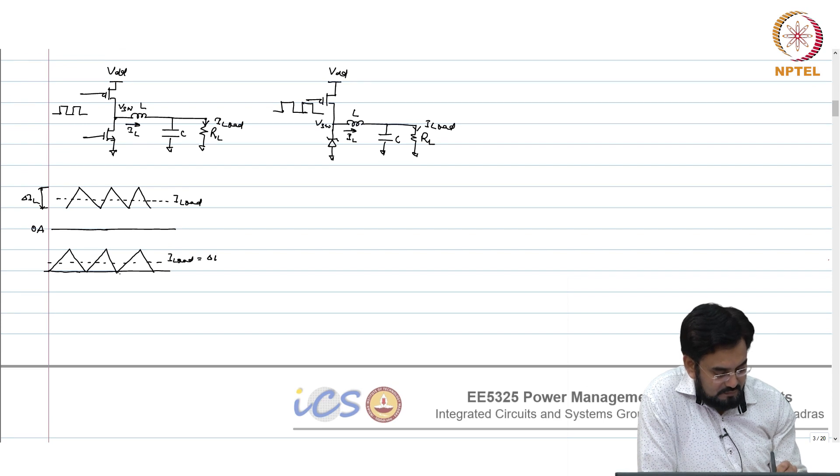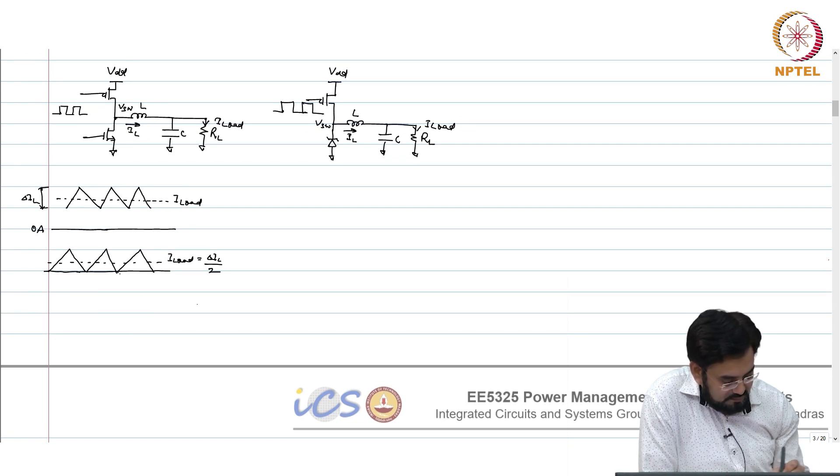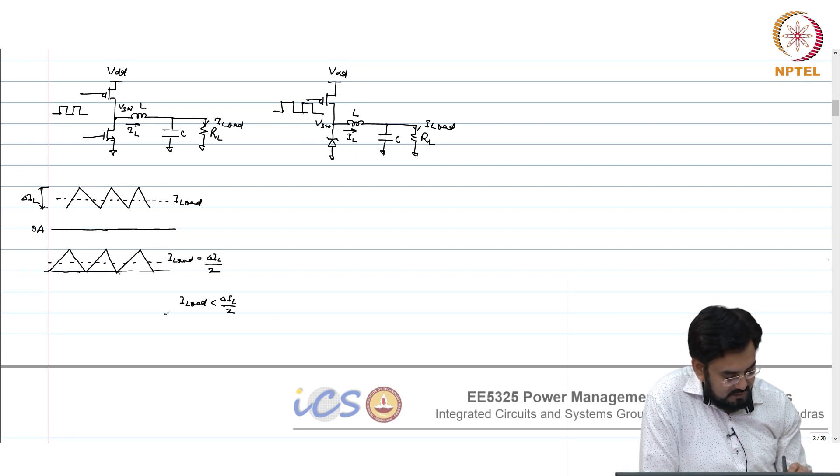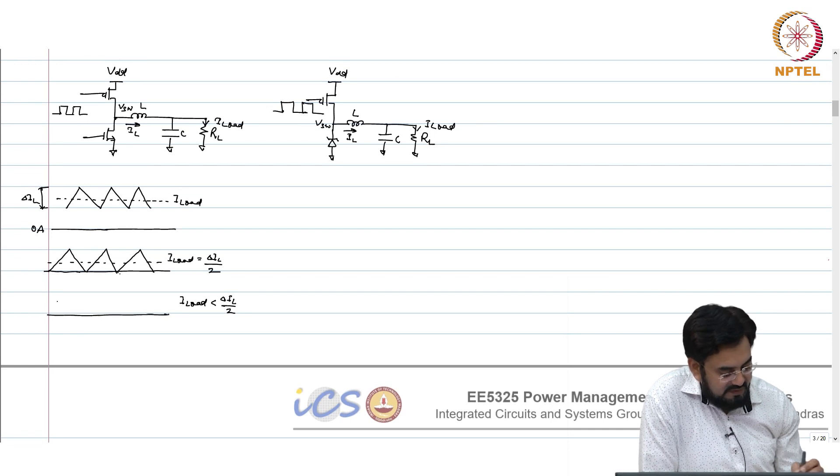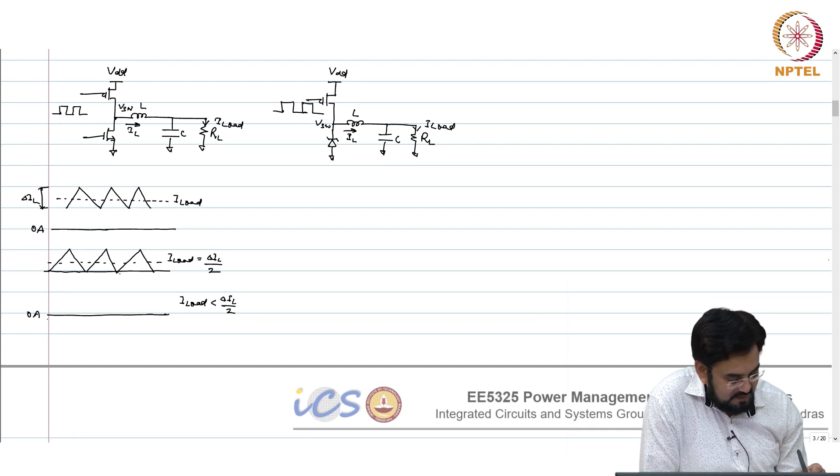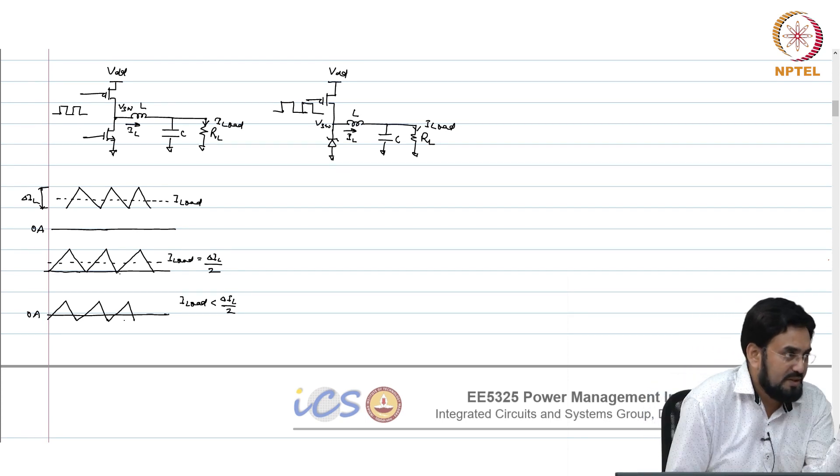Now if I_load is less than delta_L by 2, what would happen? Where will the valley go? It will go to negative. It will look something like this, and if you have a zero then it will cross at the midpoint.